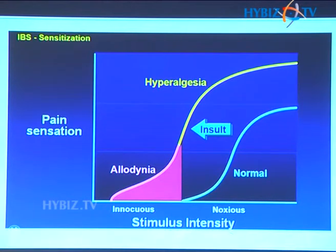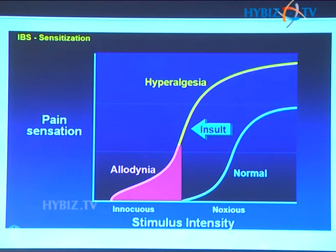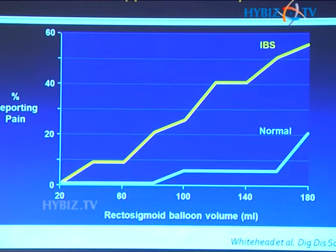When allodynia occurs at a particular site, the site of injury, it is called primary hyperalgesia. The surrounding tissue also becomes sensitive and starts to send out pain signals — that is called secondary hyperalgesia. All of these form part of visceral hypersensitivity, and this is one of the foundational publications that helped establish this concept.